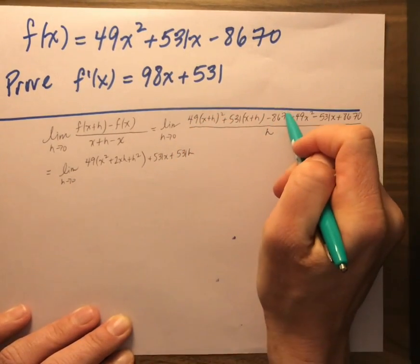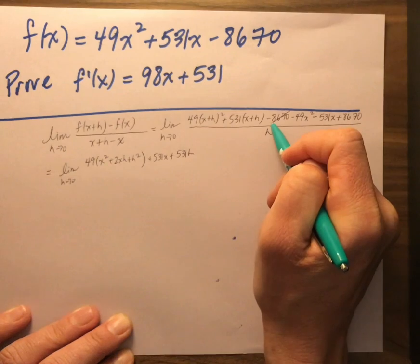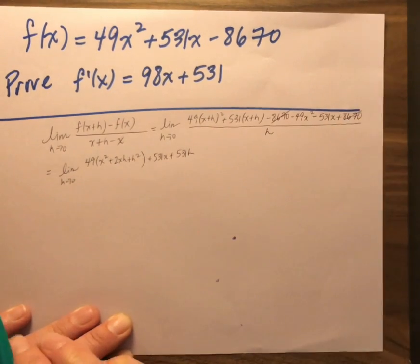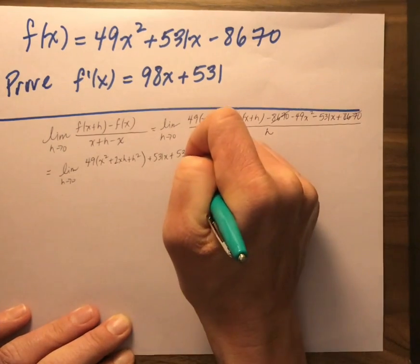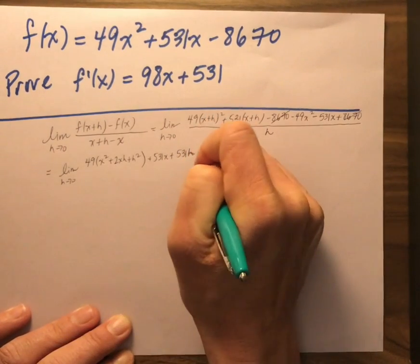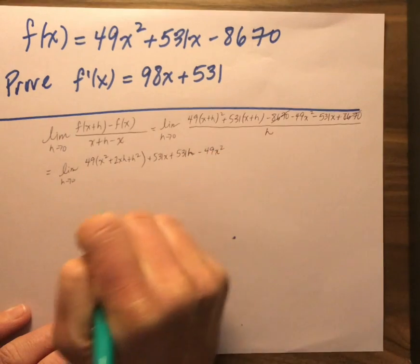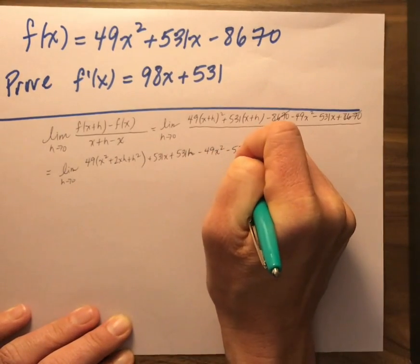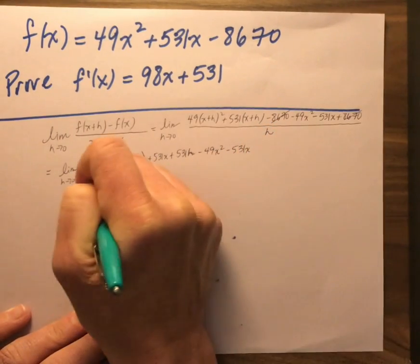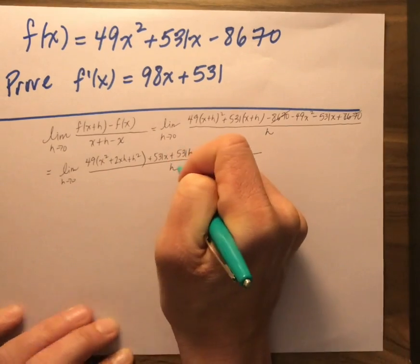And I'm going to get lazy here. I know I have a negative 8670 plus a positive 8670. So to save myself some time and money, I'm going to knock those two out. My h got a little nasty there. So now I've got minus 49x squared minus 531x all over h.